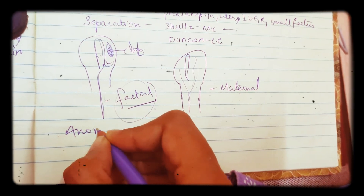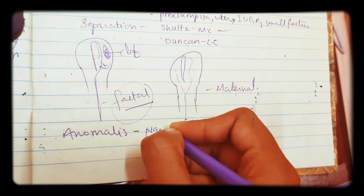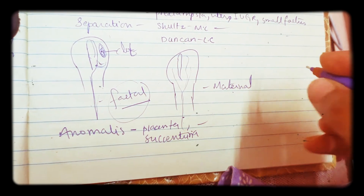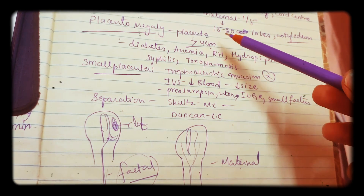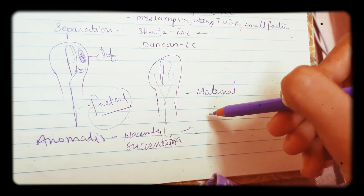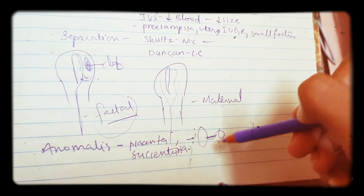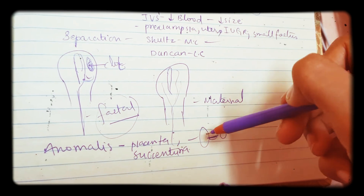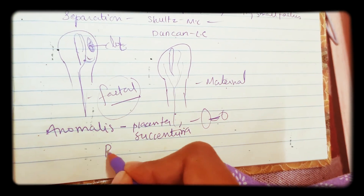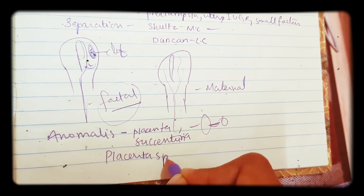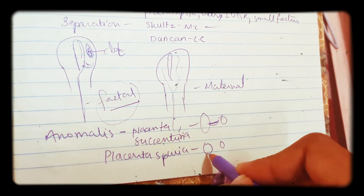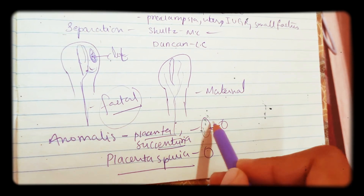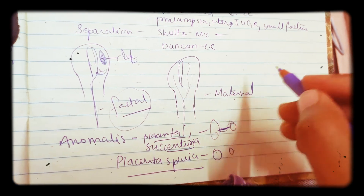Now coming to some anomalies of the placenta. The first is placenta succenturiata, where two lobes are formed: one lobe is small and one is big, and in between there is a blood vessel connecting them. The next is placenta spuria — here also there are two unequal lobes, one bigger and one smaller, but they are not connected by any blood vessel.